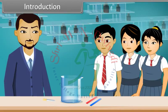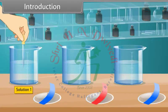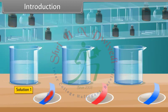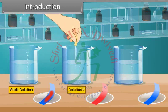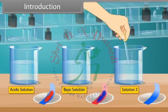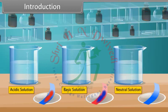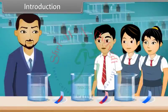Hello students, good morning. Today we will perform an experiment to identify the acidic, basic, or neutral solution. First, put a drop of solution 1 on the blue litmus paper — it turns red, showing acidic behavior. Next, put a drop of solution 2 on the red litmus paper — it turns blue, showing basic behavior. Finally, solution 3 shows no color change, indicating a neutral solution at equilibrium.